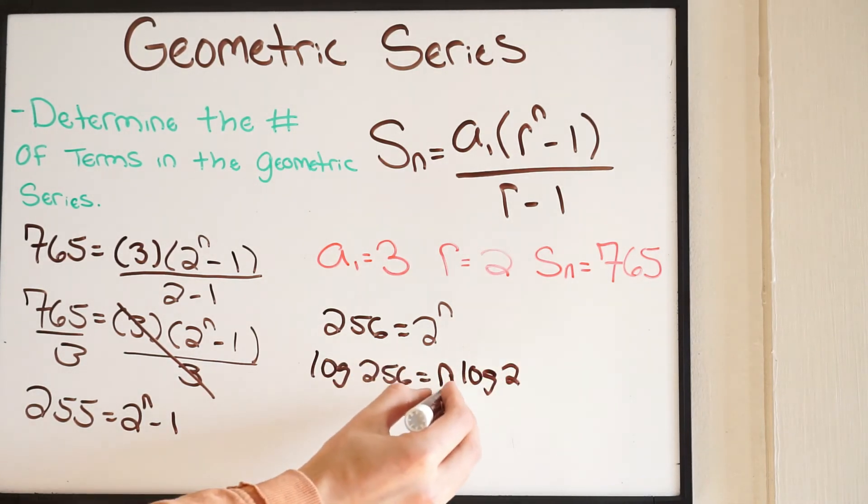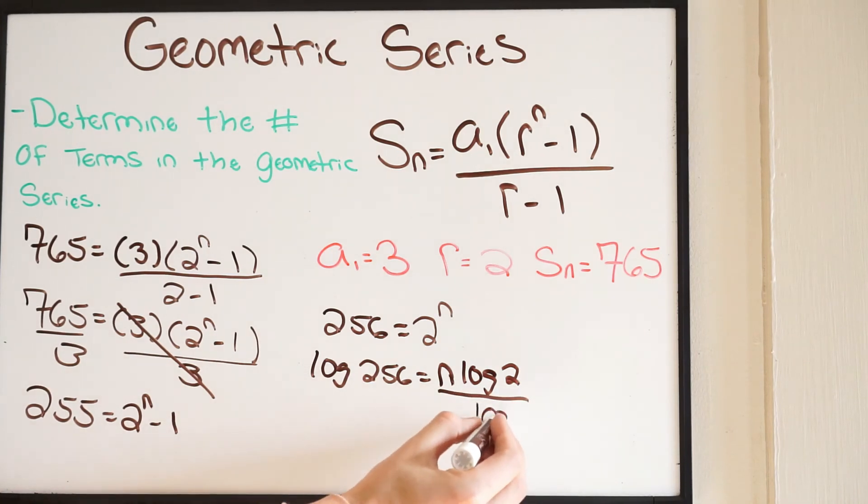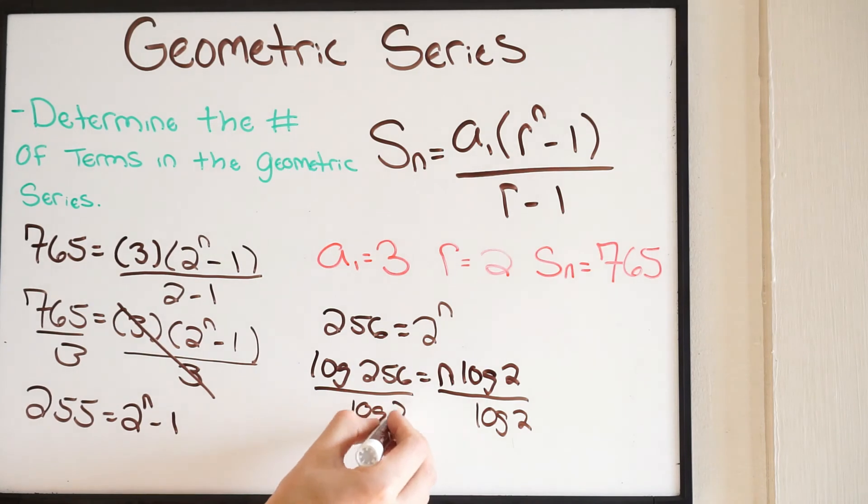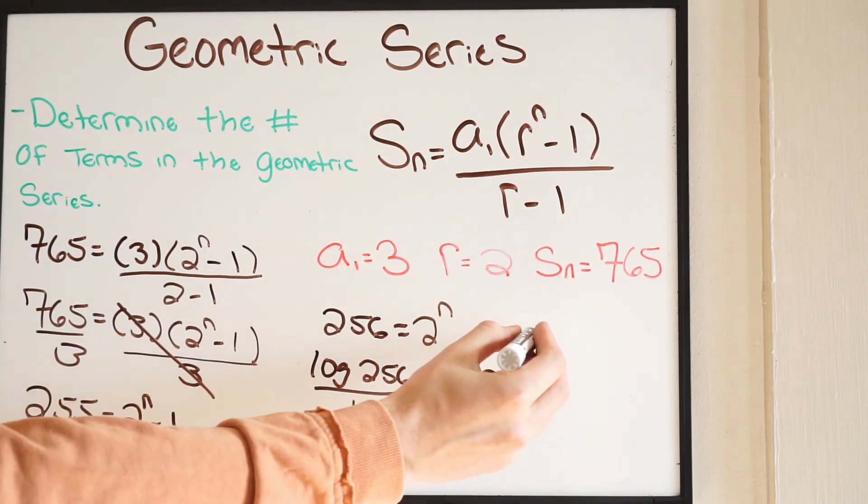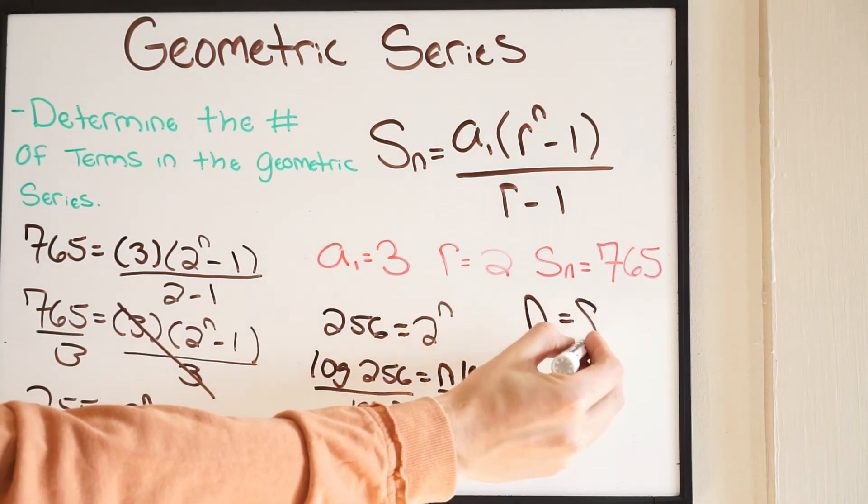All we have to do now is divide both sides by log 2, and log 2 will cancel. Let's go ahead and plug this into our calculator. So log 256, then divided by log 2, we get 8. So N here equals 8.